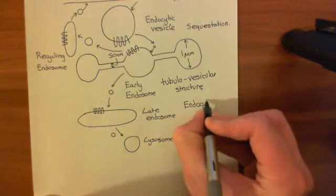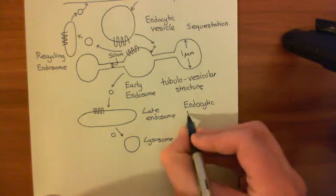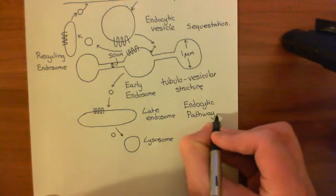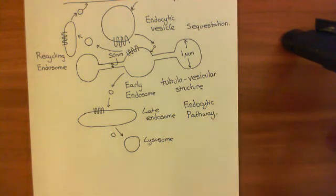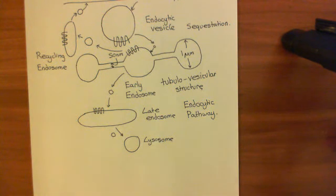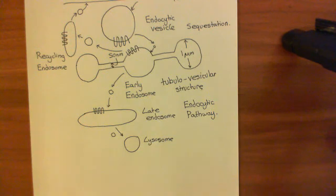So in summary, the endocytic pathway allows us to remove beta-2 adrenergic receptors from the plasma membrane. We can sequester them in the early endosome and then recycle them back to the plasma membrane once the agonist has been removed, or we can permanently downregulate them by sending them to the late endosome and then on to the lysosome where they'll be destroyed. Both of these are mechanisms of desensitization of the cell to the agonist, which in this case is adrenaline.